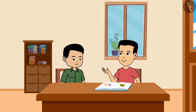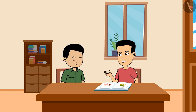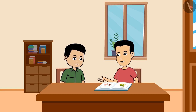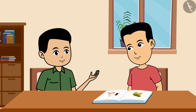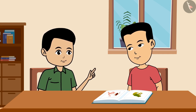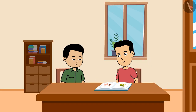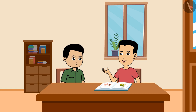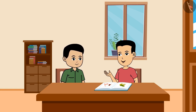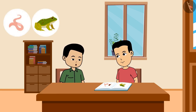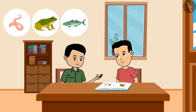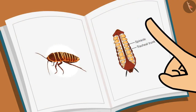Ramesh finds the section in the book about how animals like cockroaches and fish breathe. Deepak doubts that small creatures like cockroaches and fish have lungs, though he knows large animals like elephants, lions, cows, and goats do. They find information about cockroaches, earthworms, frogs, and fish all written together in the book.